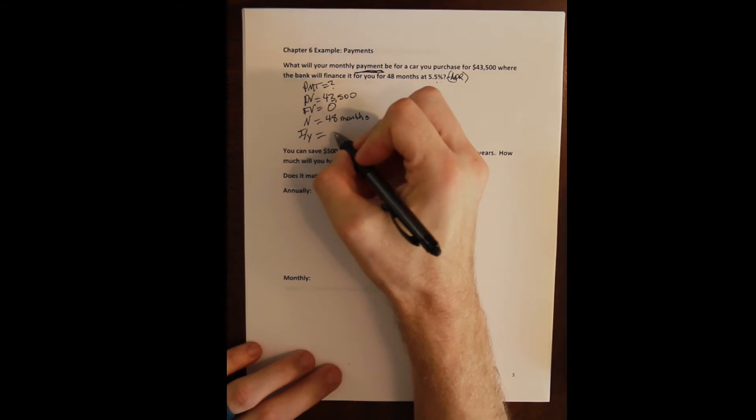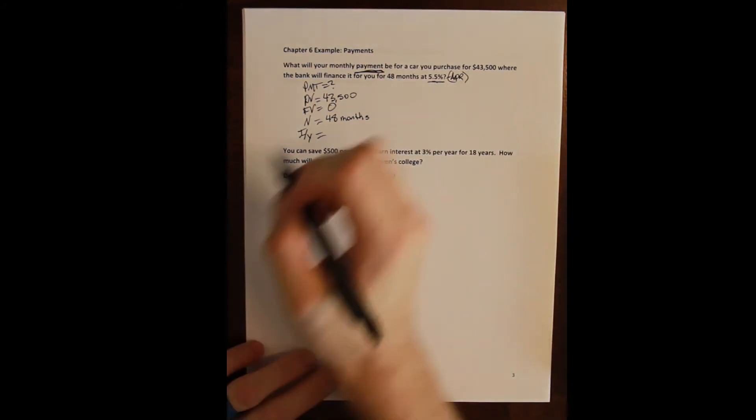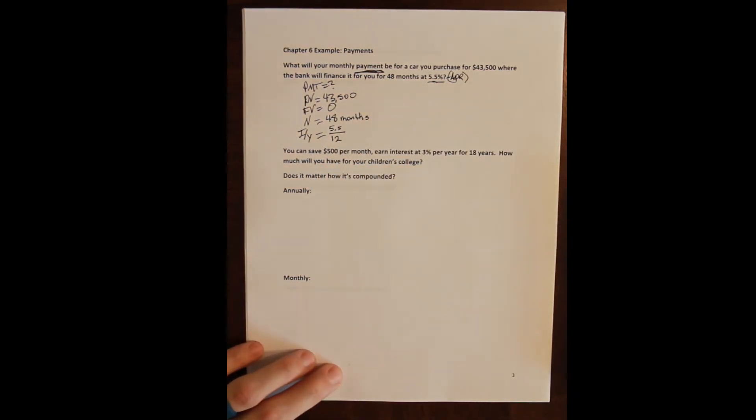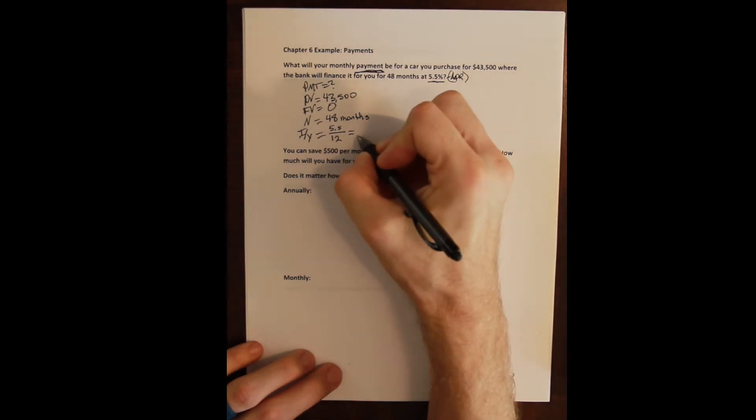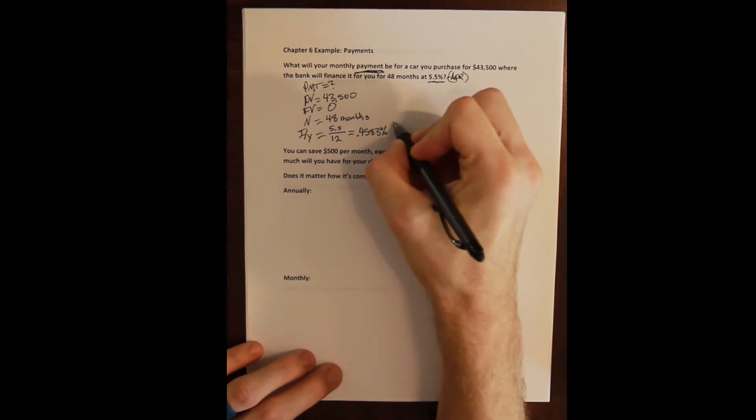The IY however was given to us in an annual rate. It's always given as the APR. So the IY is going to be 5.5 but we need to convert it to a monthly rate. So we convert something that is annual to something that is monthly by dividing by 12, the number of months in the year. And we get a monthly rate of 0.4583% per month.